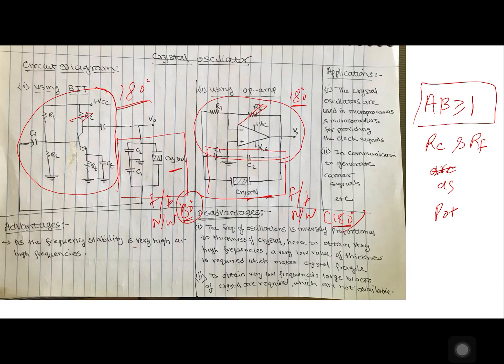Advantages: high stability at very high frequency. The drawback is frequency of oscillation you have derived, where it was like this 1 upon 2 pi root of Ls into Cs. Now when we need a high frequency the thickness of crystal is very low, which makes crystal very fragile. So very high frequency has a problem. And if you need a low frequency you will need a large block of crystal which are not available.